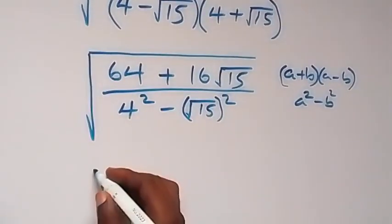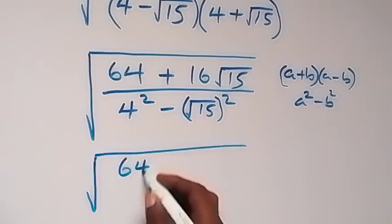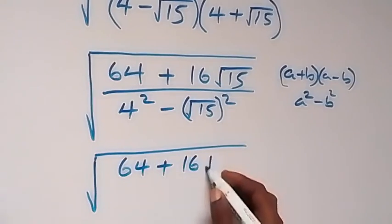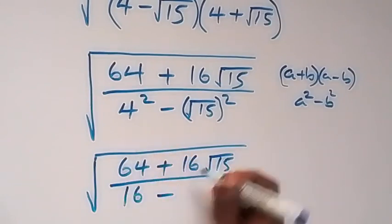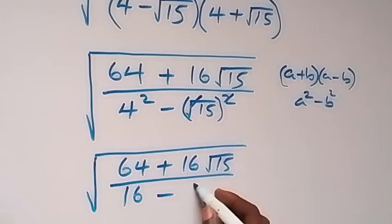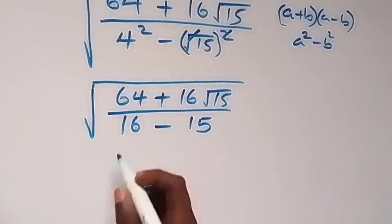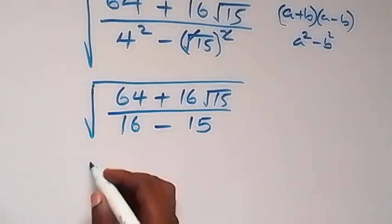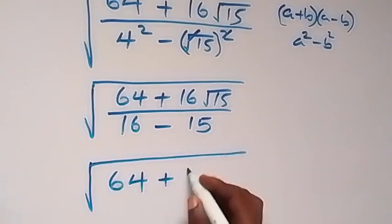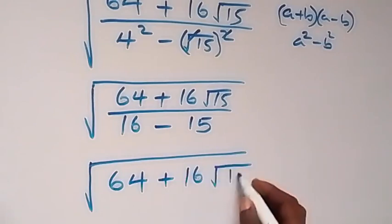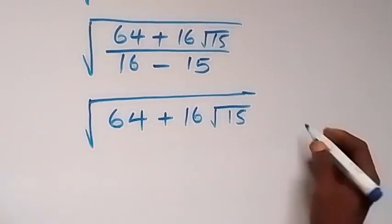We are left with the square root of 64 plus 16 root 15, all over 4² minus (root 15)². Now 4² is 16 and (root 15)² is 15, so the denominator becomes 16 minus 15, which is 1. We have 64 plus 16 root 15 over 1.